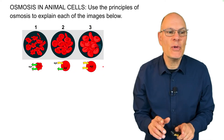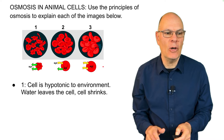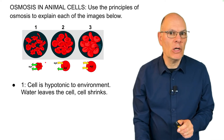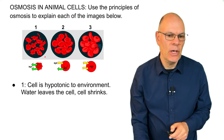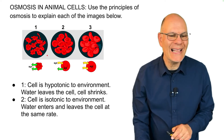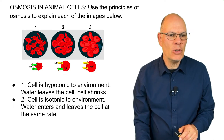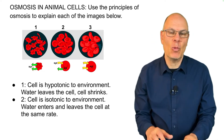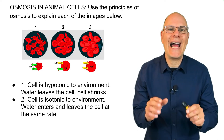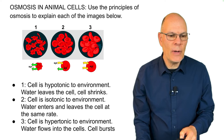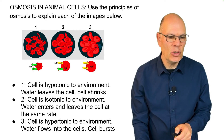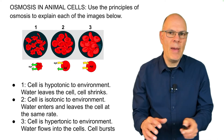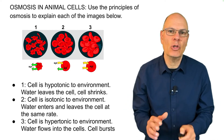Osmosis in animal cells: use the principles of osmosis to explain each of the images below. In cell one, the cell is hypotonic to its environment, water leaves the cell, and the cell shrivels up. In situation two, the cell is isotonic to its environment and water enters and leaves at the same rate — an important condition for animal cells since they have a membrane but no wall; cells in tissue culture need to be kept in an isotonic solution. In situation three, the cell is hypertonic to its environment, water flows in, and because there's no cell wall, the membrane cannot stop the inward force and the cell will ultimately burst.